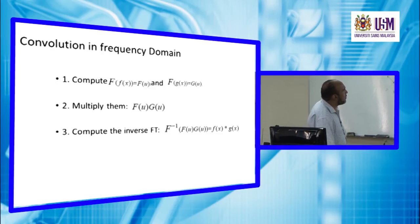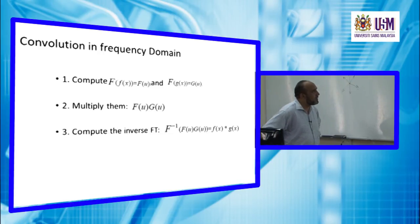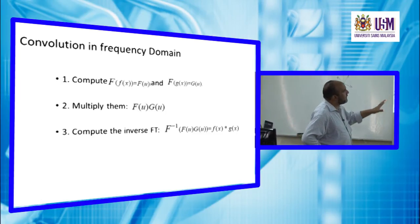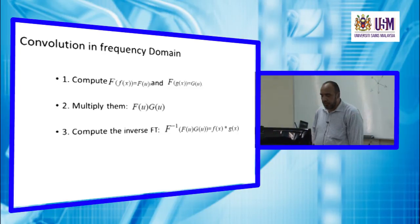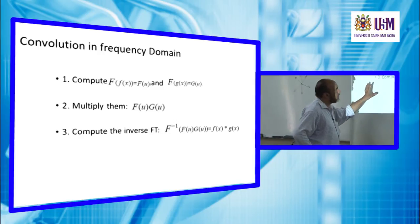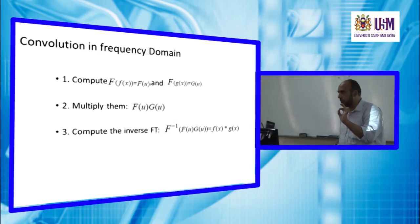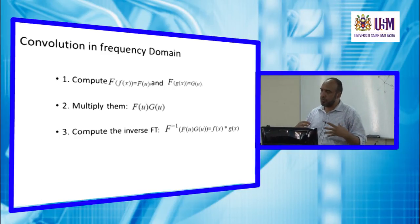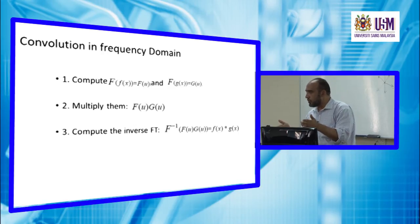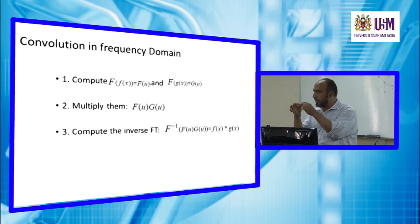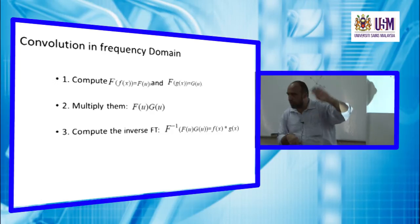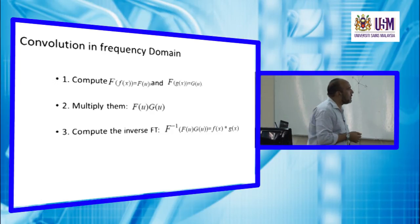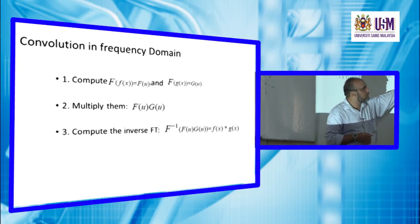The steps for convolution in the frequency domain are: first, compute the Fourier transform of the first function, then the Fourier transform of the second function. Second, multiply both Fourier transforms point-by-point — at each frequency value, multiply the two amplitudes together. Third, compute the inverse Fourier transform of the product to get the convolution in the time domain.